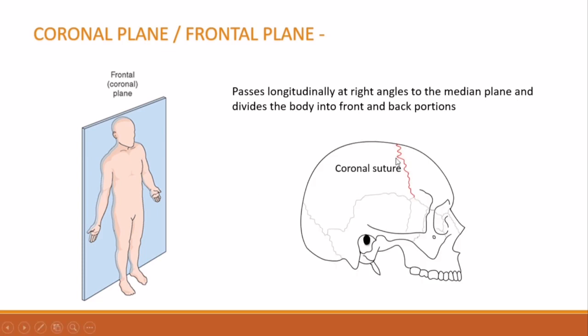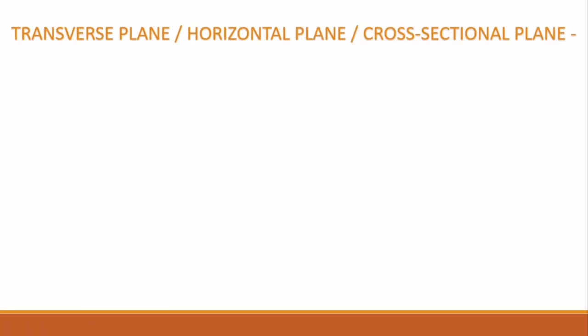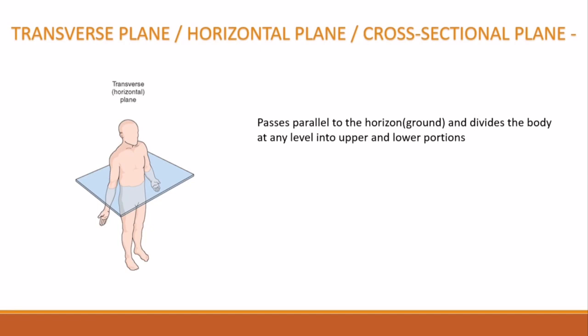The coronal plane is so named because it corresponds to the coronal suture. The coronal suture is the transverse suture in the skull separating the frontal bone from the parietal bone. Fourth is the transverse plane, also known as the horizontal or cross-sectional plane. This plane passes parallel to the ground and divides the body at any level into upper and lower portions. The transverse plane is perpendicular to the median plane.